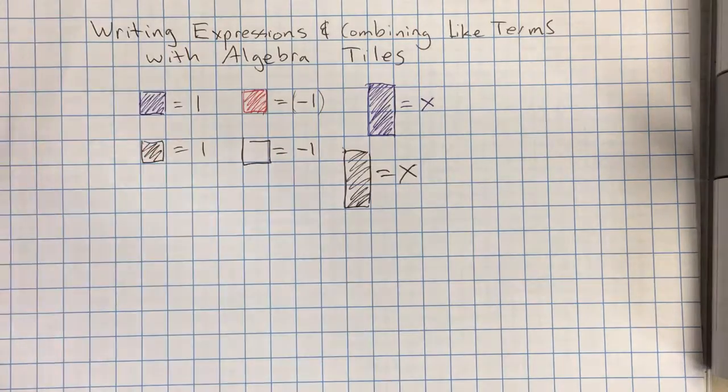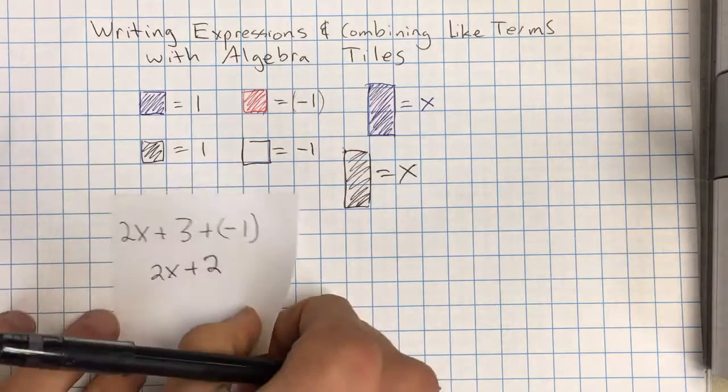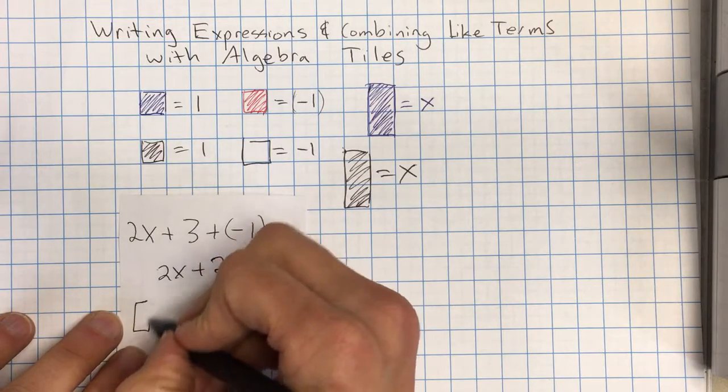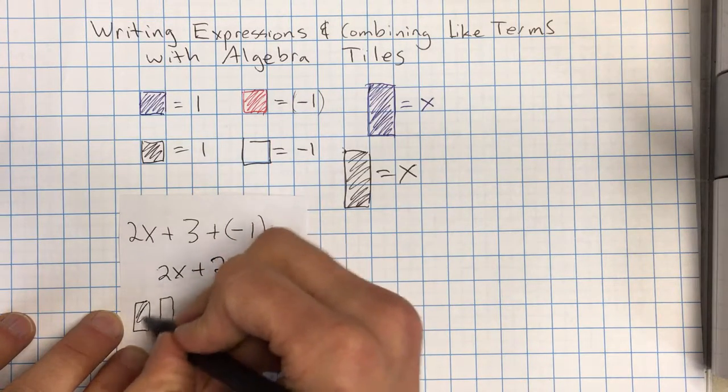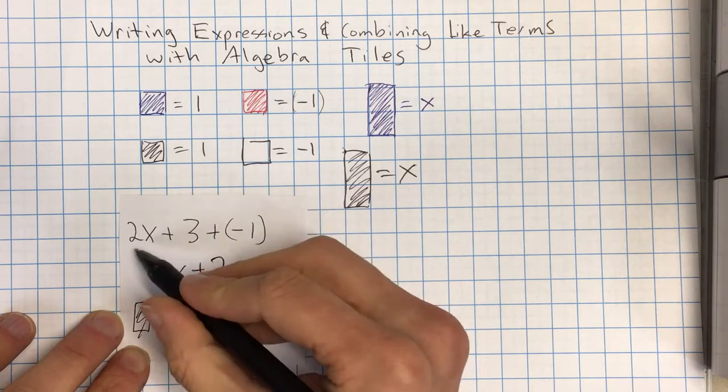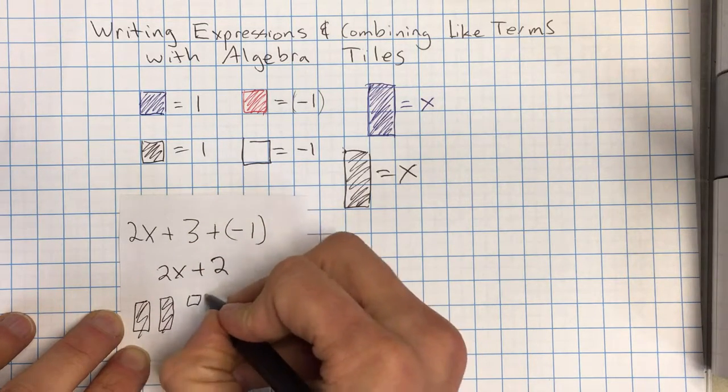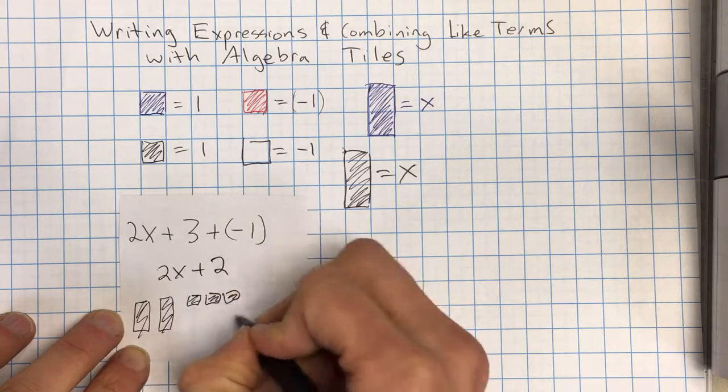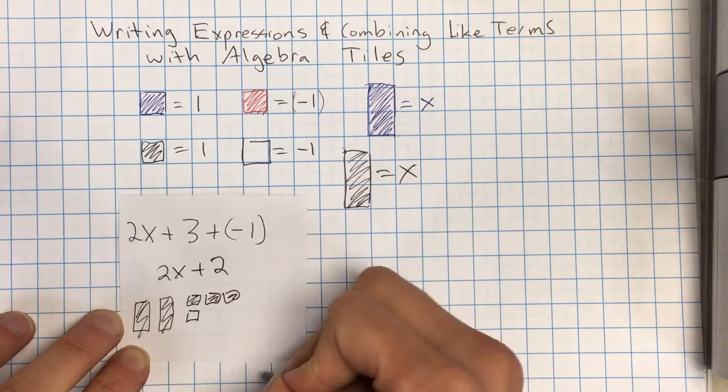If I wanted to do one like this one right here, I would just draw 2 x's. Shade those in. And I'm just going with this top part. I know it's going to end up like this. But 2 x's, 3 shaded in pieces, and then 1 negative.